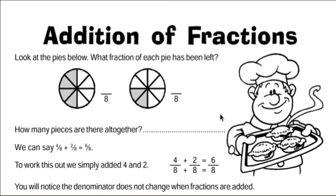The denominator doesn't change because all we're adding is the number of parts that we've got: 1, 2, 3, 4, plus 5, 6.